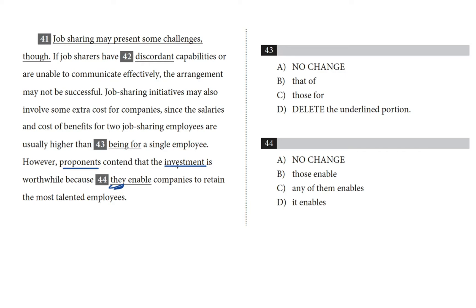So far so good, but hold up. By using 'they,' the underlined part is implying that the proponents are also doing the enabling, but that's not right. It is the investment that is worthwhile because the investment enables companies to retain the most talented employees. Proponents is plural and investment is singular, and that means we need an 'it' and not a 'they.'